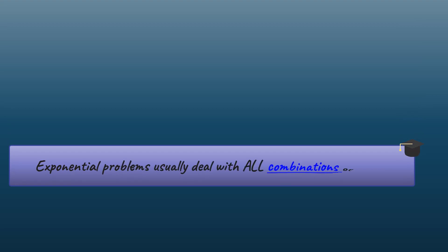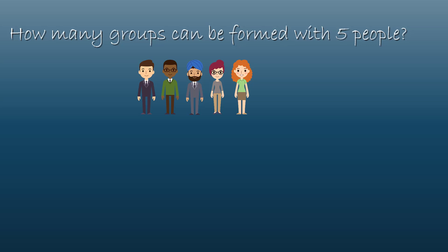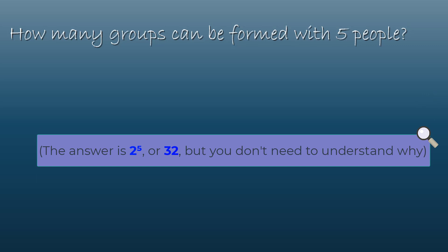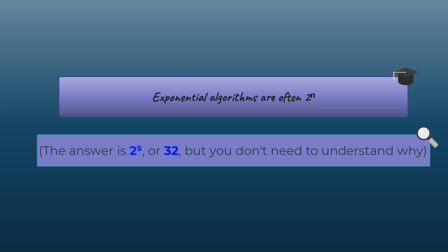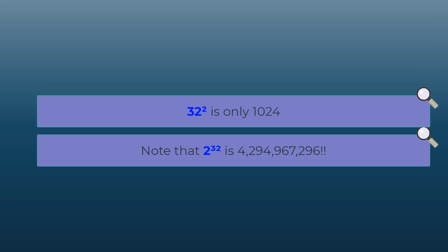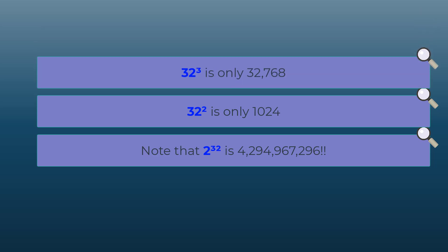You generally get exponential efficiency when talking about all combinations of things — for example, all possible groups of people from a list of five. A common exponential algorithm might require 2-to-the-n steps. When n is just 32, you're already in the billions of steps. Compare that to 32-squared, which is about a thousand, or 32-cubed, which is still only in the thousands — those grow much slower than exponential.